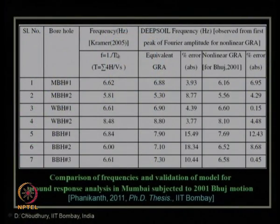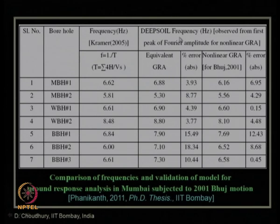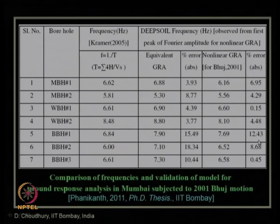We also compared the fundamental natural period estimated using the standard thumb-rule formula for a homogeneous soil layer — based on Vs and layer thickness — against the value obtained from DEEPSOIL software using equivalent linear and non-linear ground response analysis for Bhuj 2001 motion. The percent difference is within about 18% for equivalent linear and within about 12–12.5% for non-linear analysis.